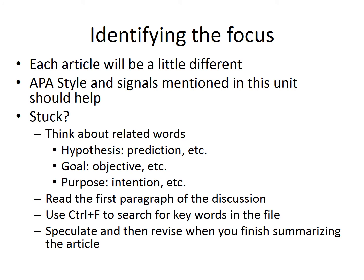Examples not only provide practice, but they highlight that each article will be a little different. APA style helps us know where to look and this unit mentioned a number of signal words to look for. If you're stuck, you can use a search function to look for keywords in the file. Sometimes you might need to think about alternative words the authors might have used. If that doesn't work, read the first couple paragraphs of the discussion. Remember APA style encourages authors to summarize the results in the context of the question or hypothesis. If you're still stuck, take a guess and come back to it after you finish the summary.